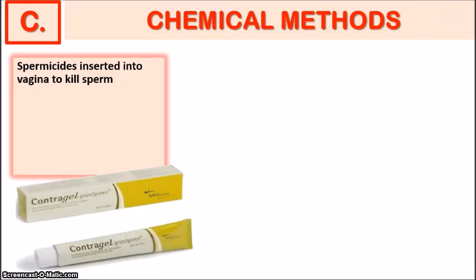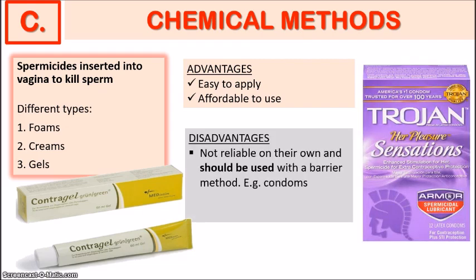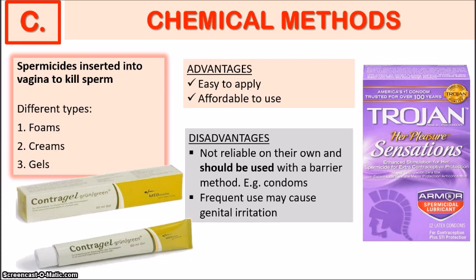Chemical methods are spermicides, which are inserted into the vagina to kill sperm. They come in various forms: foams, creams, and gels. These methods are usually easy to apply and affordable, however they are not reliable on their own and should be used with a barrier method such as condoms or a diaphragm. They are not useful alone because not every single sperm will necessarily be killed. There is also the possibility of genital irritation caused by frequent use.